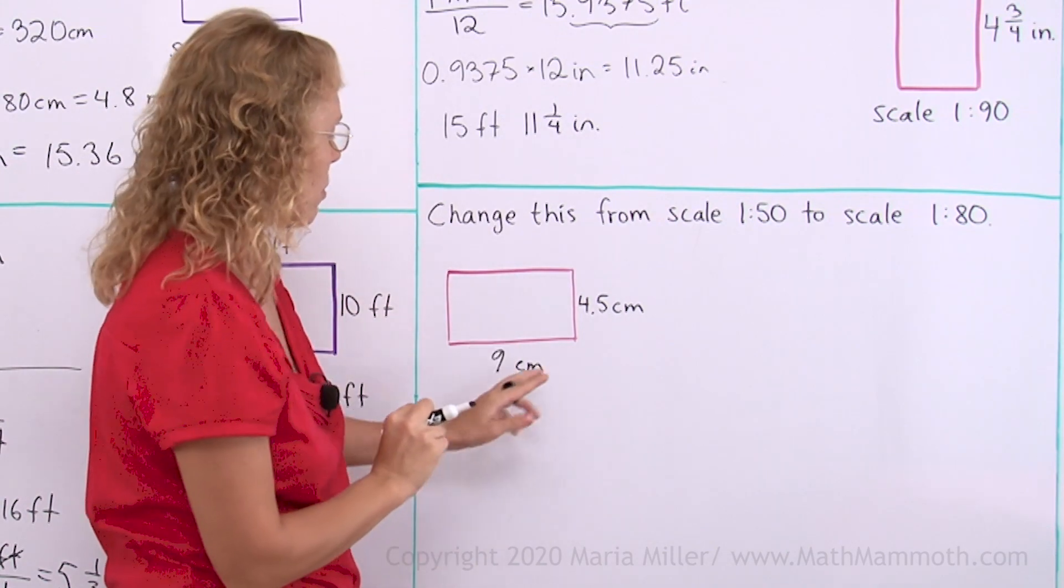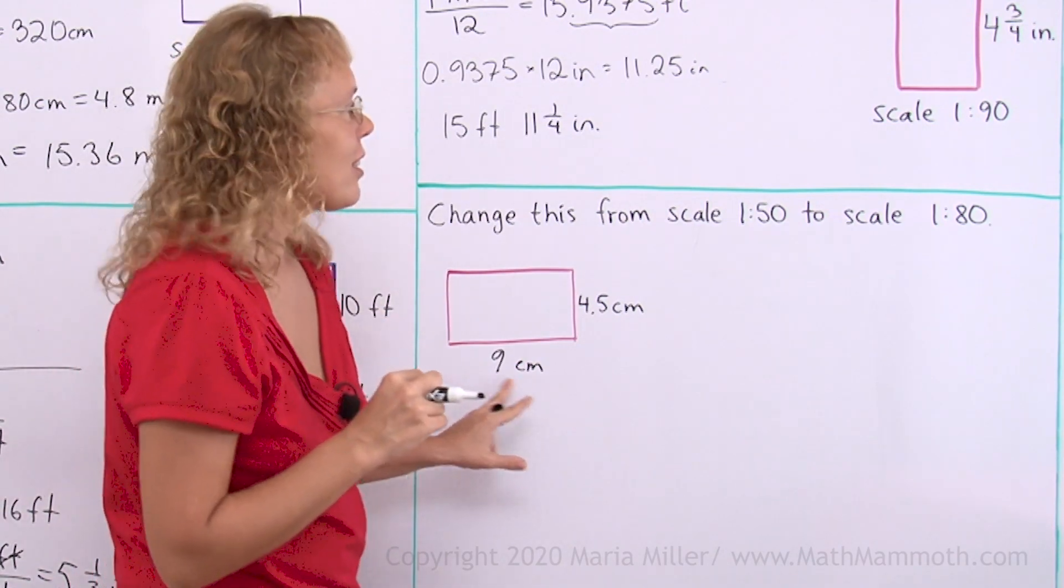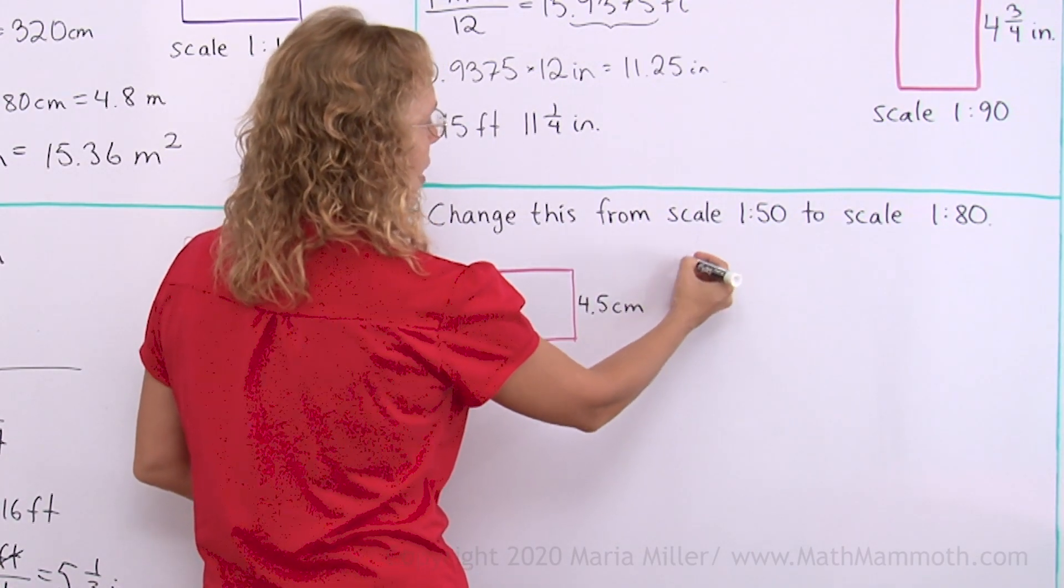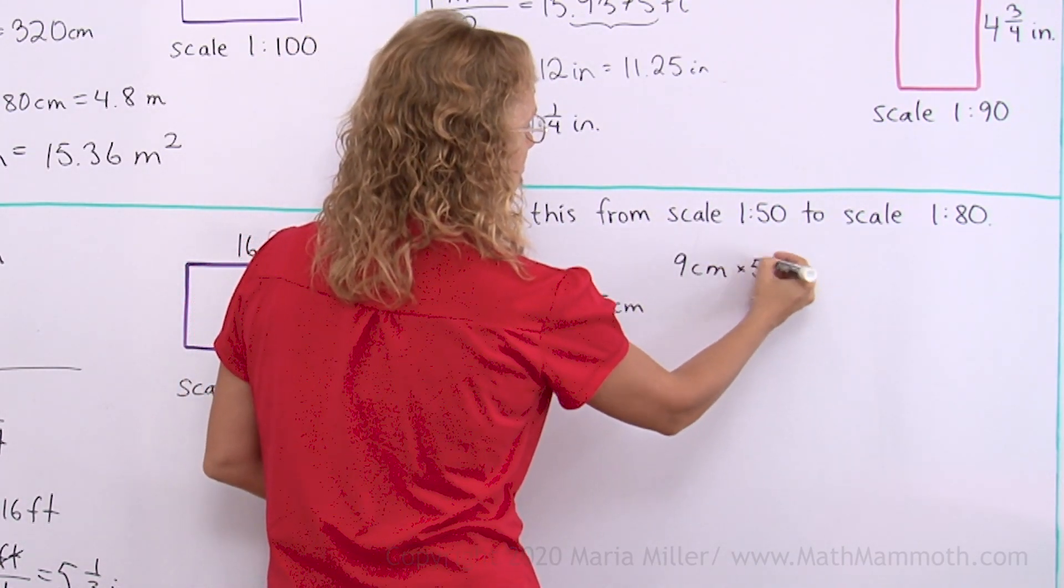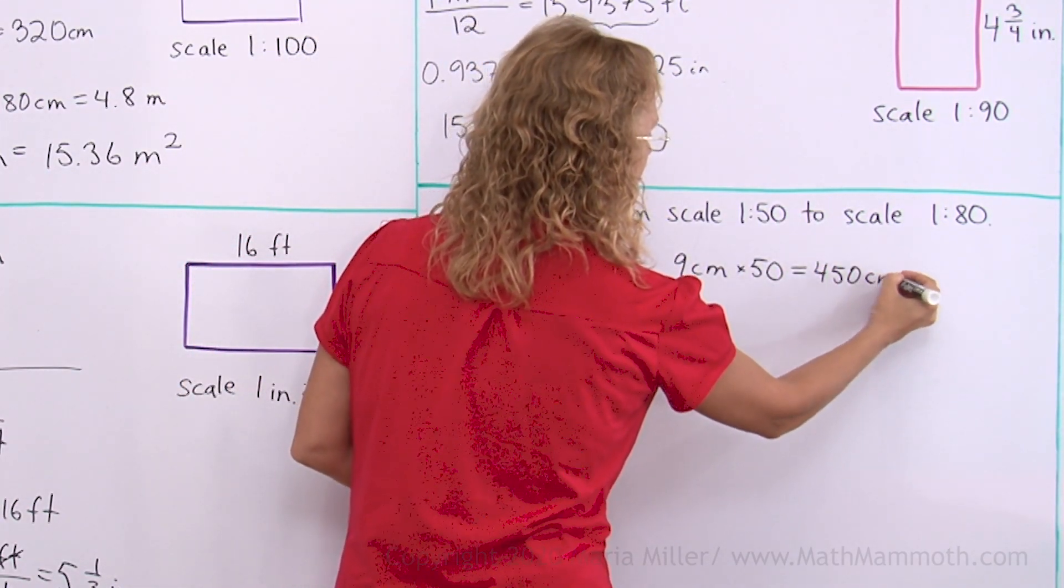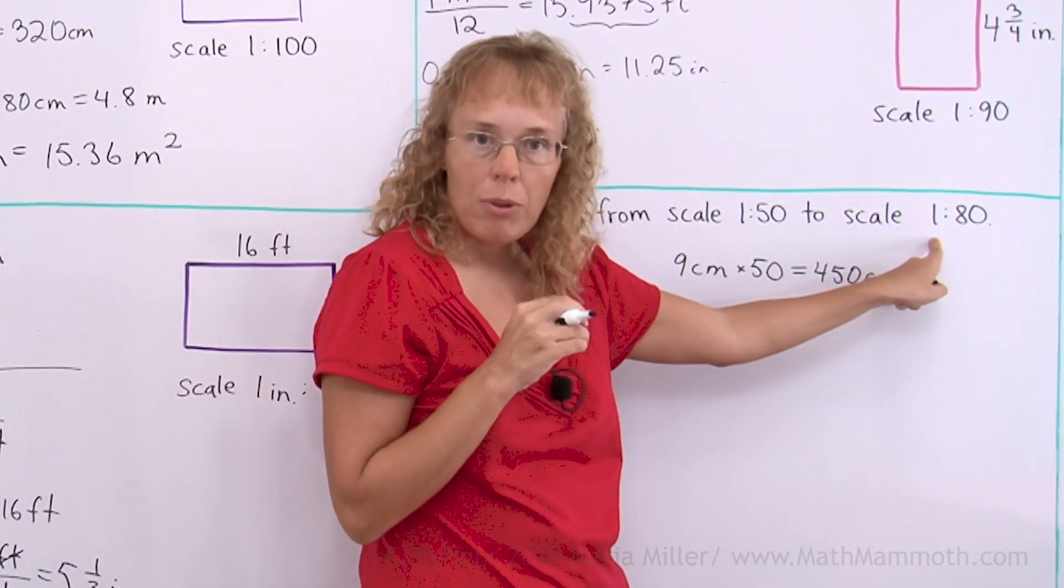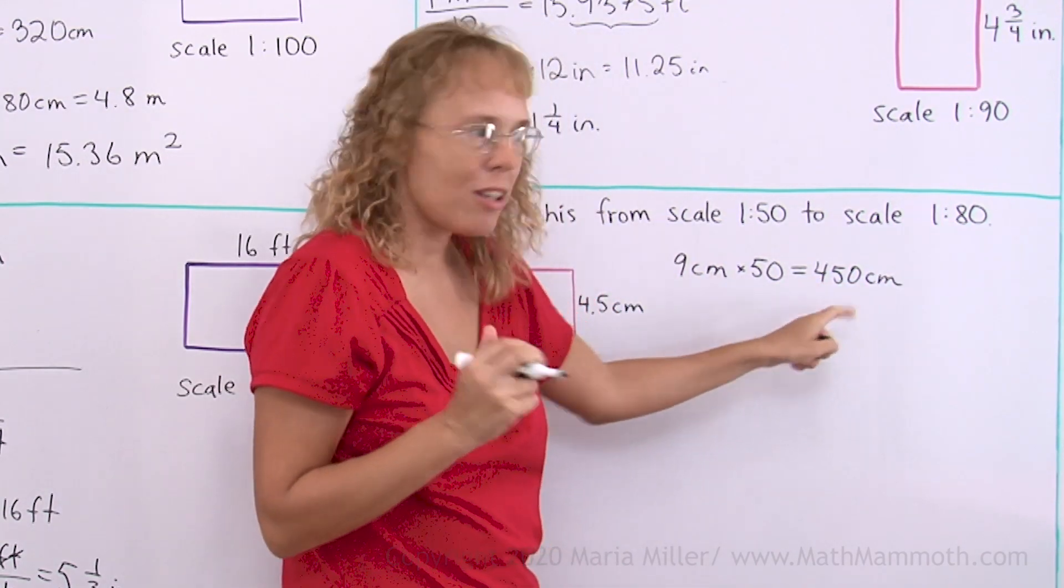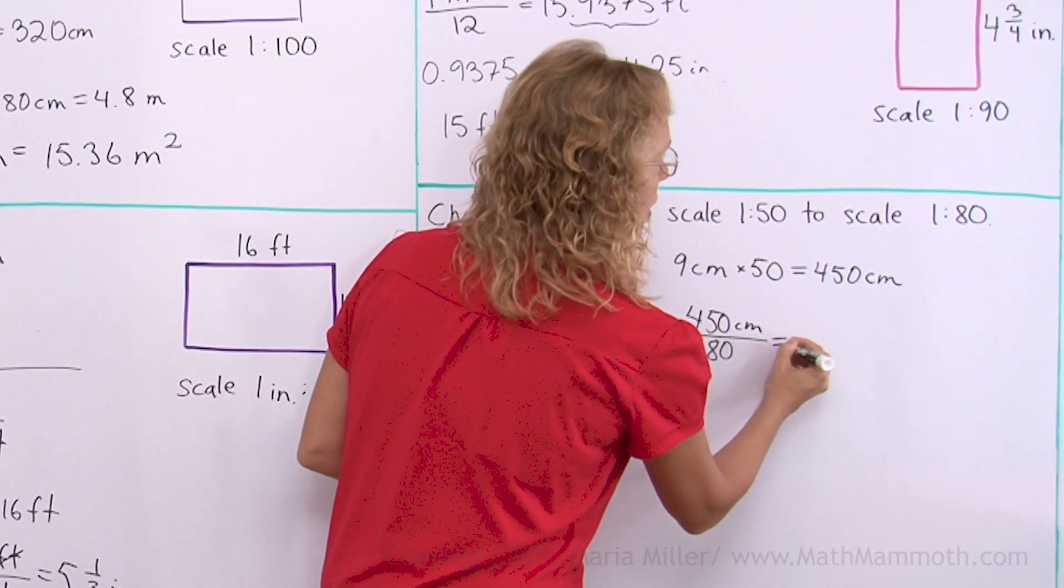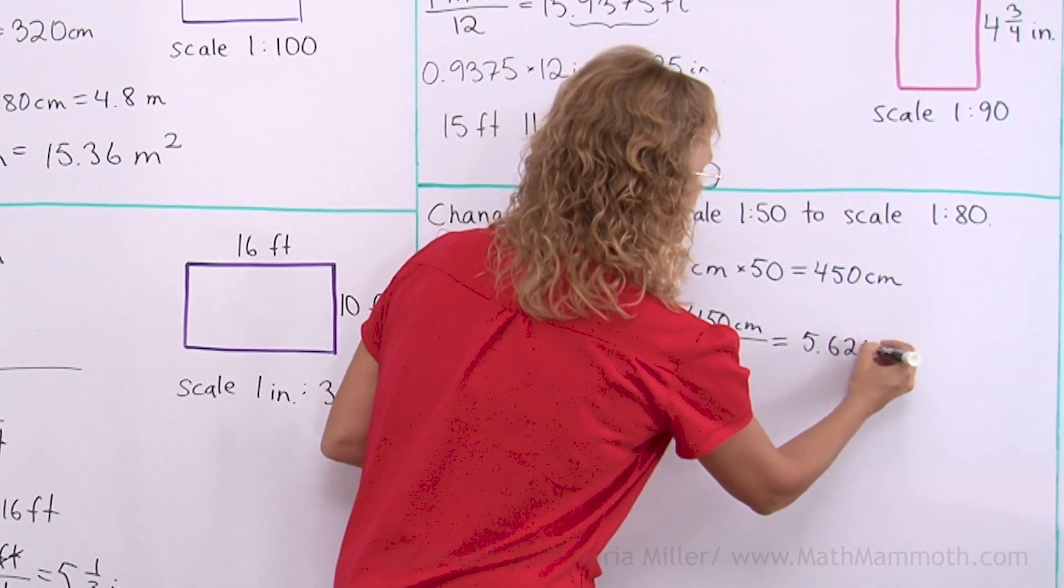One way to do this is that we will just calculate how long and how wide the room is in reality, and then go from that to scale 1 to 80. For example, 9 cm here, in reality it will be, since this is a scale 1 to 50, in reality it is 450 cm. And then, if we take this and change it to scale 1 to 80, it is 80 times smaller. We need to divide this by 80. And we get 5.625 cm.